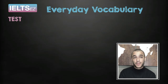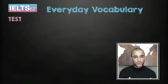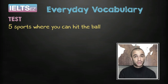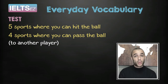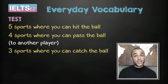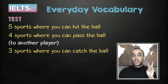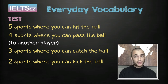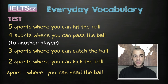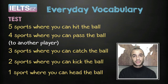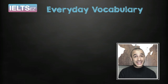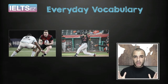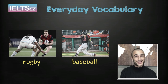Here is a quick test for you now. Take your notebook and a pen again to write down some answers to these questions and pause the video when you need to. Can you name five sports where you can hit the ball? Four sports where you can pass the ball to another player. Three sports where you can catch the ball. Two sports where you can kick the ball. And one sport where you can head the ball. Finally, what are the two sports in the pictures? If you said rugby and baseball, then you are correct. Good work.